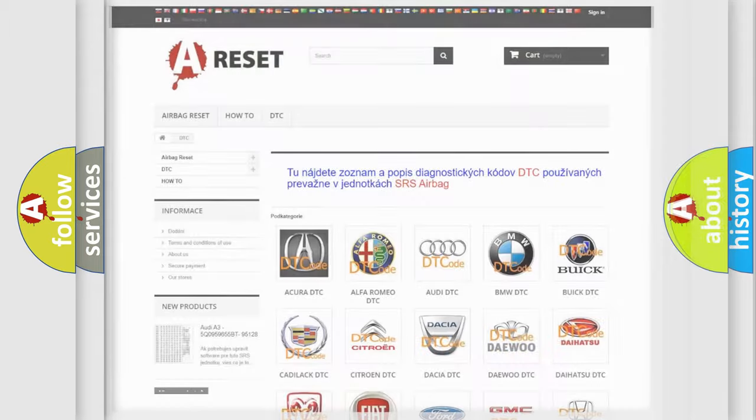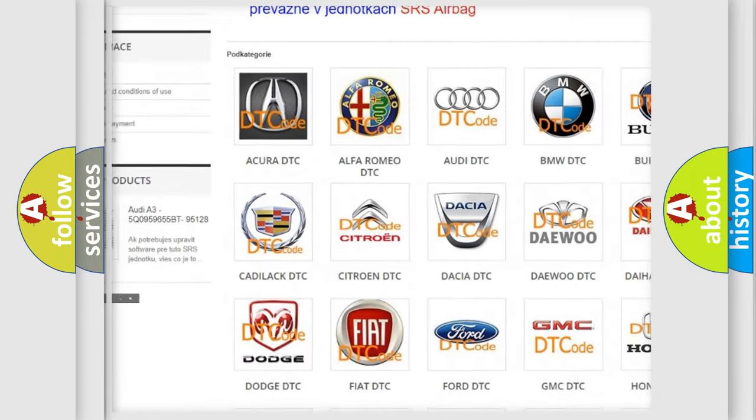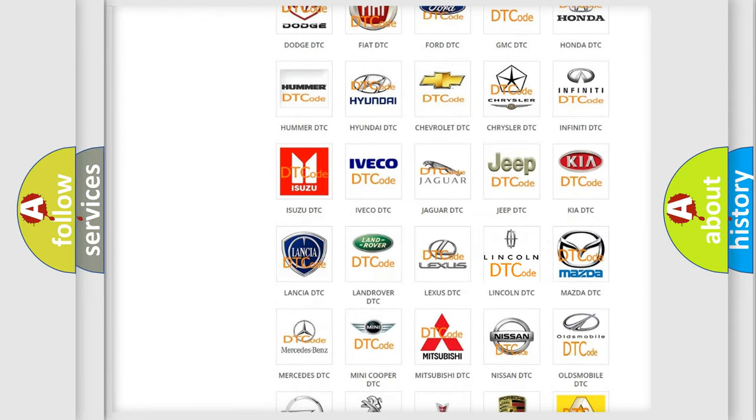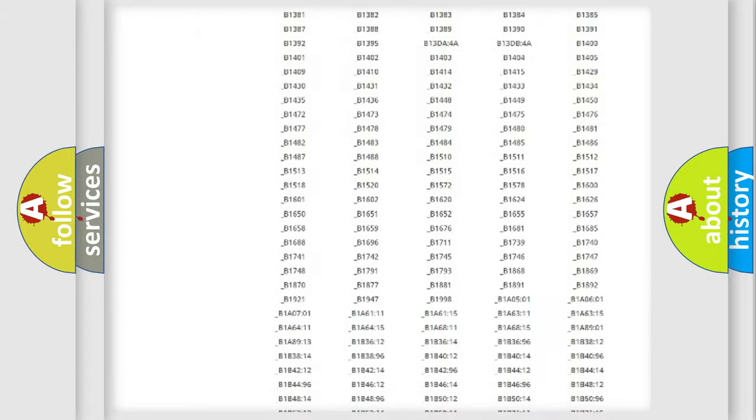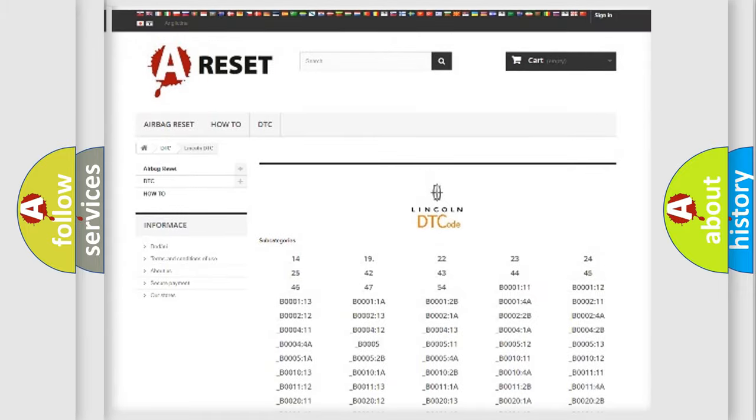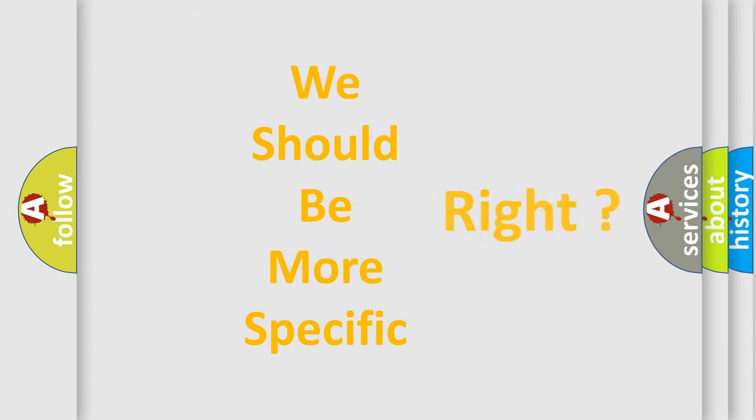Our website airbagreset.sk produces useful videos for you. You do not have to go through the OBD2 protocol anymore to know how to troubleshoot any car breakdown. You will find all the diagnostic codes that can be diagnosed in Lincoln vehicles, and many other useful things. The following demonstration will help you look into the world of software for car control units.